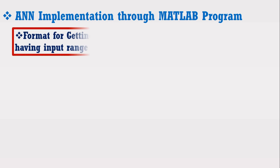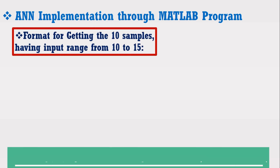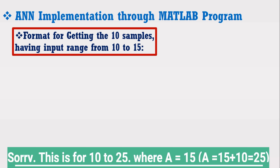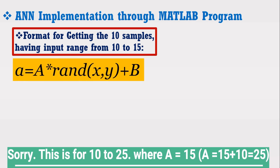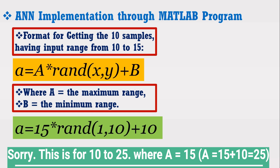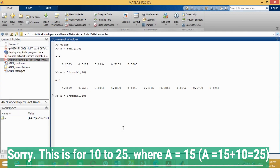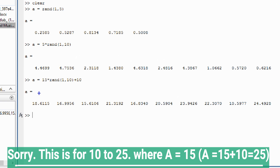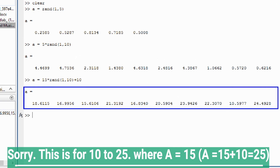Now suppose we want to generate 10 random numbers from 10 to 15 range. MATLAB has the following syntax for this, where A shows the maximum range and B shows the minimum range. Therefore, to get 10 random numbers from 10 to 15, the following changes are required. Just write this code on the command window and press enter — you can see MATLAB has generated 10 random numbers within the range of 10 and 15. I hope now you are clear how different random numbers can be generated for different input ranges.